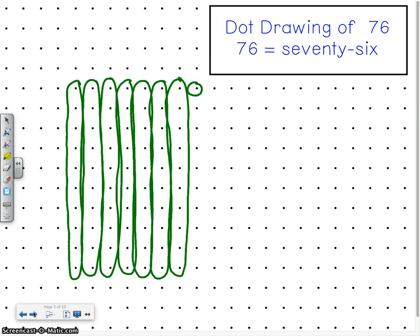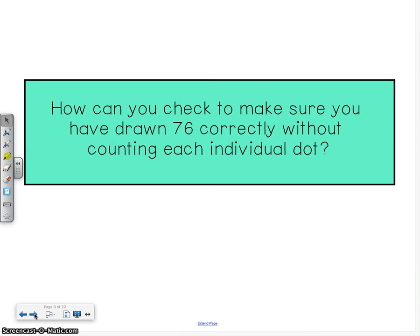So we have 1, 2, 3, 4, 5, and 6. So how can we check to make sure that we have drawn 76 correctly without counting each individual dot?